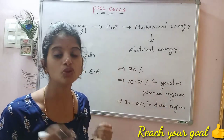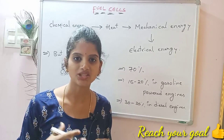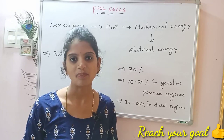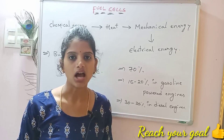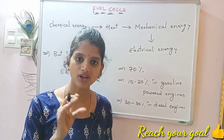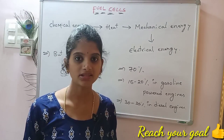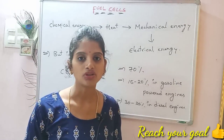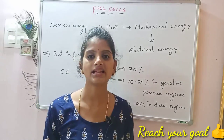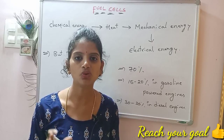Fuel cells consist of two electrodes, an electrolyte, and a catalyst. The different types of fuel cells are: alkaline fuel cells, which include H2-O2 fuel cells and methanol-oxygen fuel cells; phosphoric acid fuel cells; solid oxide fuel cells; and molten carbonate fuel cells. Today we will discuss one example of an alkaline fuel cell, which is the H2-O2 fuel cell.